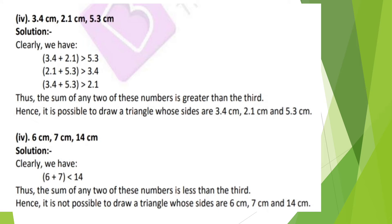Example: given three values — 3.4 cm, 2.1 cm, and 5.3 cm. Adding any two sides: 3.4 + 2.1 should be greater than 5.3; 2.1 + 5.3 is greater than 3.4; 3.4 + 5.3 is greater than 2.1. The sum of any two of these numbers is greater than the third side. Hence it is possible to draw a triangle with sides 3.4 cm, 2.1 cm, and 5.3 cm.